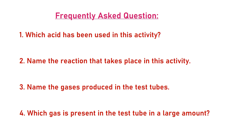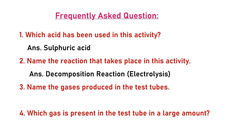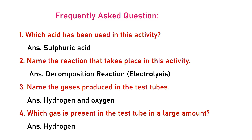Frequently asked questions: First — which acid is used in this activity? Sulfuric acid. Second — name the reaction: this is electrolysis; a decomposition reaction takes place. Third — name the gases produced: hydrogen and oxygen; the volume ratio of hydrogen to oxygen is 2:1. Fourth — which gas is present in the larger amount? Hydrogen gas.